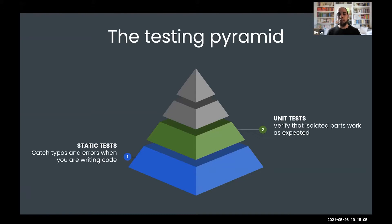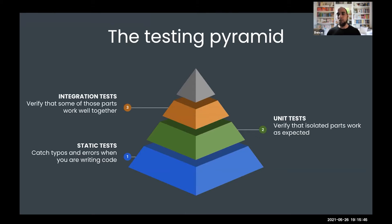Another thing that comes up here is snapshot testing, which you can use with front-end frameworks like React. It's a special kind of unit test that verifies a component renders the output it is supposed to. You save that output, and whenever you make a change to that component, you generate the output again and compare the two to make sure the change is what you intended. The next level is called integration tests, which are very similar to unit tests — relatively small tests. The difference is that integration tests take two or a few of those small units, functions, and components and verify whether those components work well together and that the communication between them is exactly as it should be.